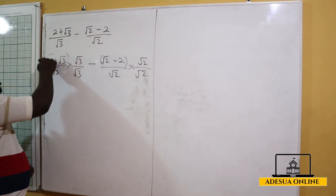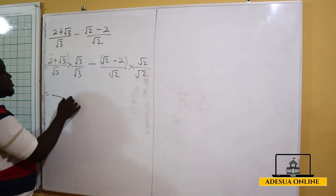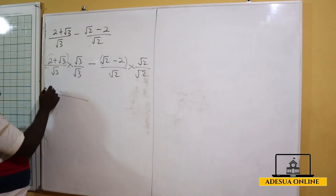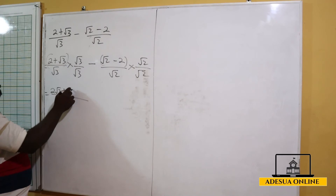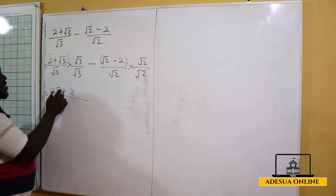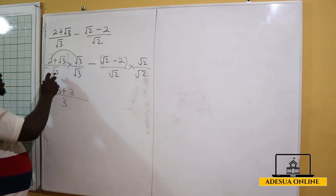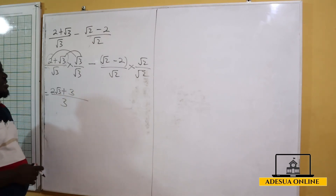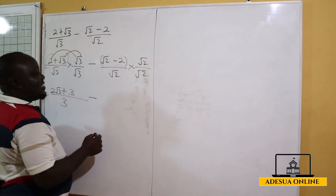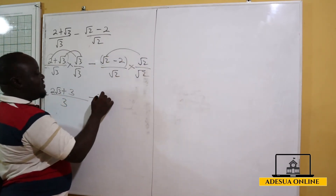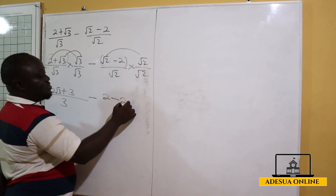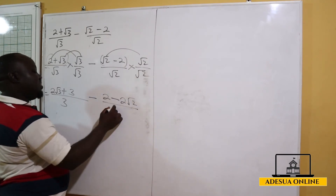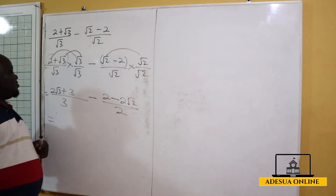Rationalizing both sides: on the left, 2 times root 3 gives 2 root 3, and root 3 times root 3 gives 3, all divided by 3. On the right, root 2 times root 2 gives 2, minus root 2 times root 2 gives 2 root 2 — wait, it's root 2 times root 2 which is 2, minus 2 root 2, all divided by 2. So we have 2 root 3 plus 3 over 3, minus 2 minus 2 root 2 over 2.